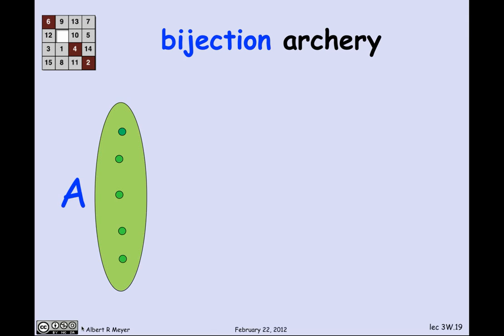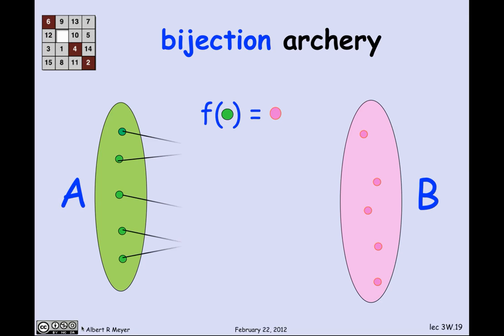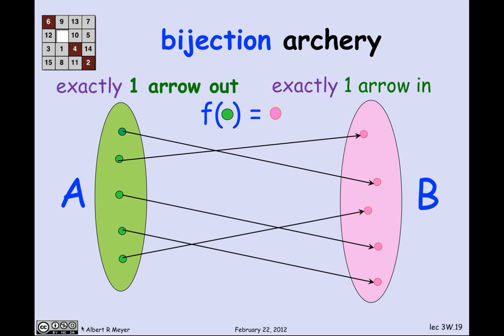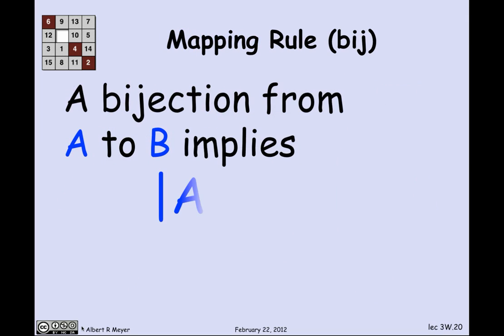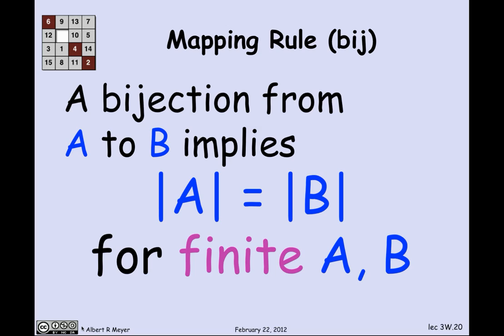A bijection is when you have all the good properties: exactly one arrow out and exactly one arrow in. It's a total function that is both an injection and a surjection — at least one and at most one for both domain and codomain gives exactly one. The key insight for counting theory is clear: since there's exactly one arrow out of every element in A, the number of arrows equals the size of A; and since there's exactly one arrow into every element of B, the number of arrows equals the size of B. Therefore, if there's a bijection between two finite sets A and B, they must be the same size.